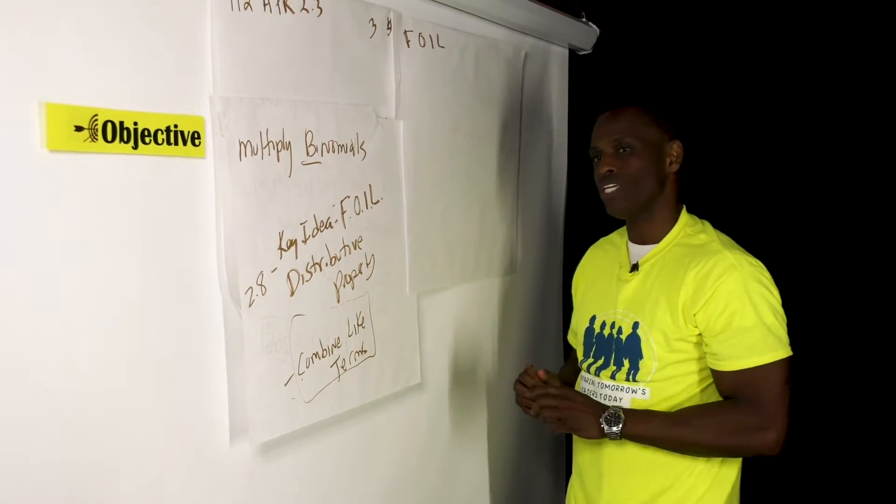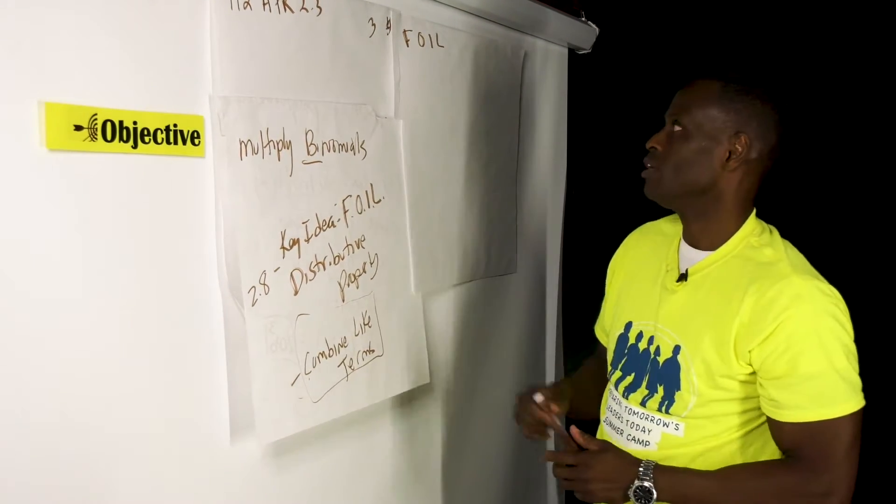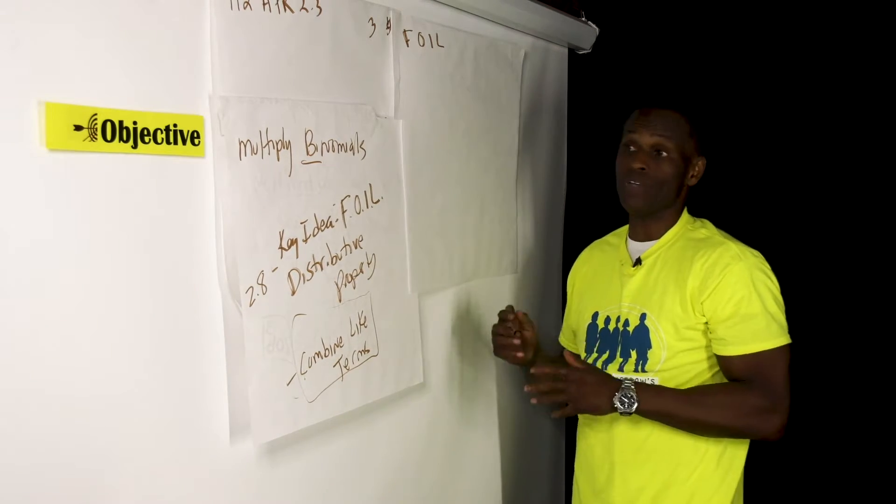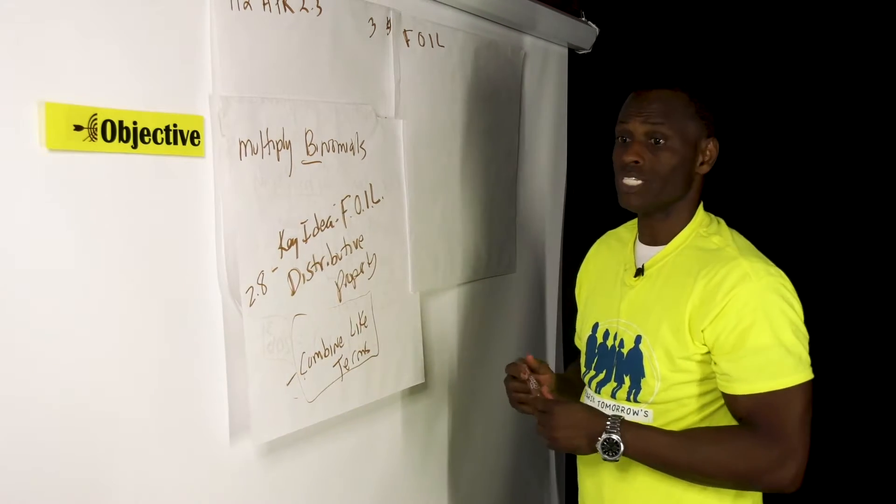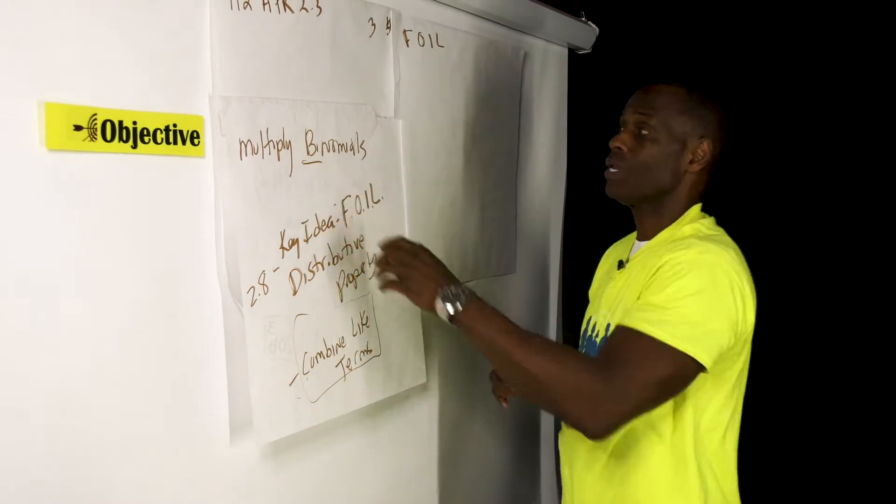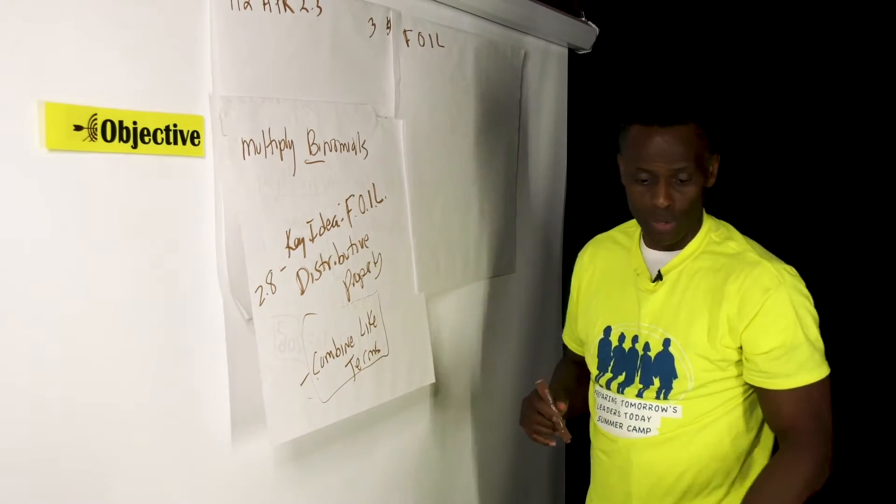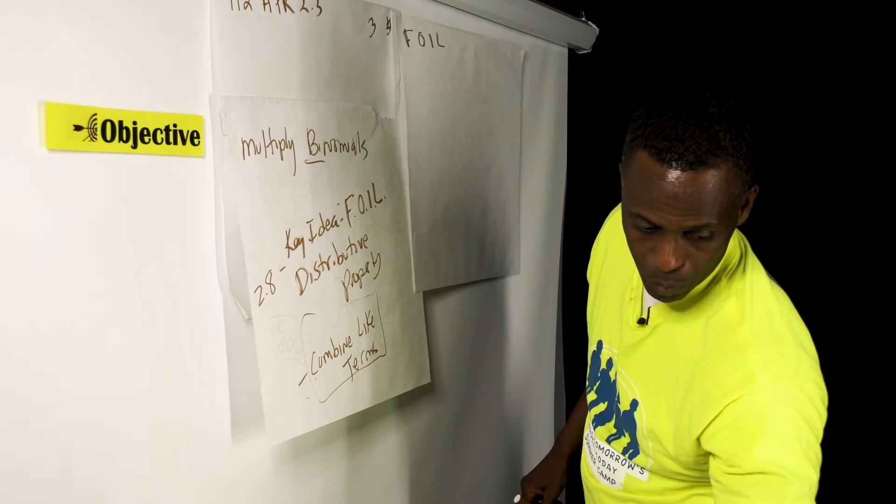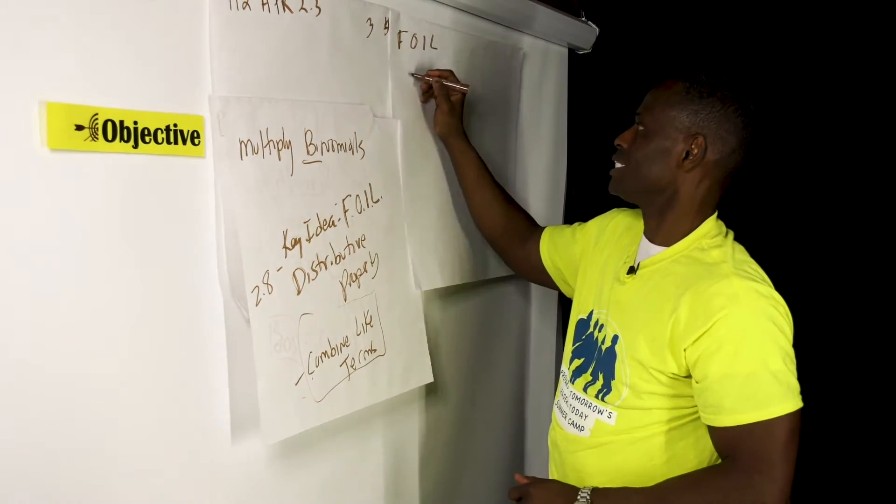And we want to sharpen our mind today by multiplying binomials. In the last video, we did distributive property. But we're going to touch on the FOIL technique because I want to let you know the benefits and the limitations of using the FOIL technique when solving and multiplying binomials. So it's important that you understand that you can use the FOIL technique. And let's write an example right quick.